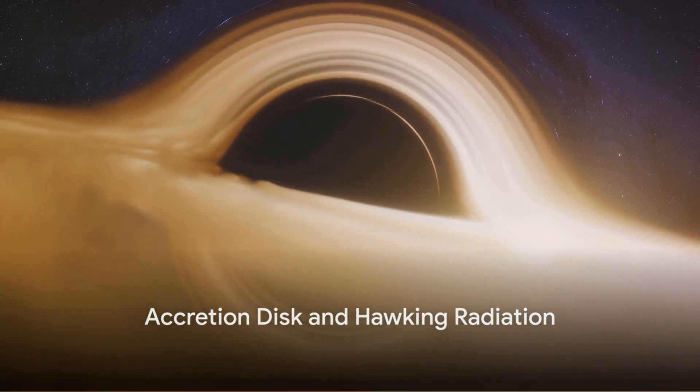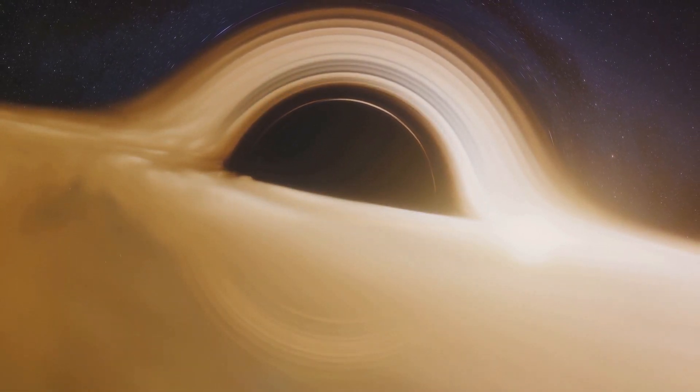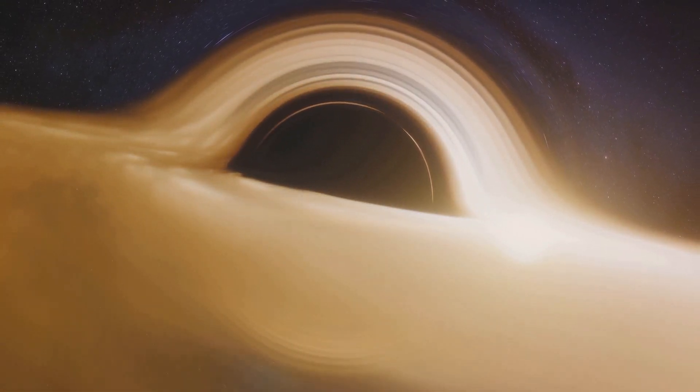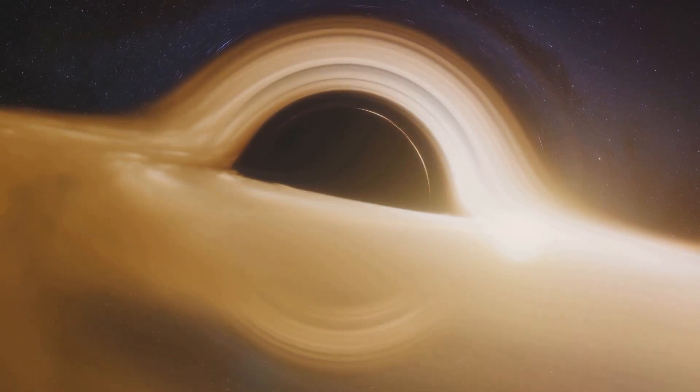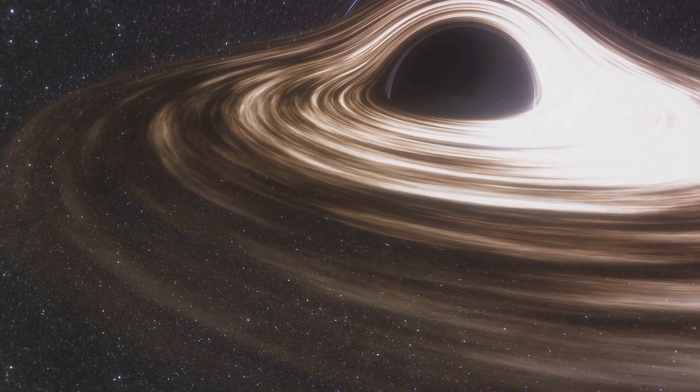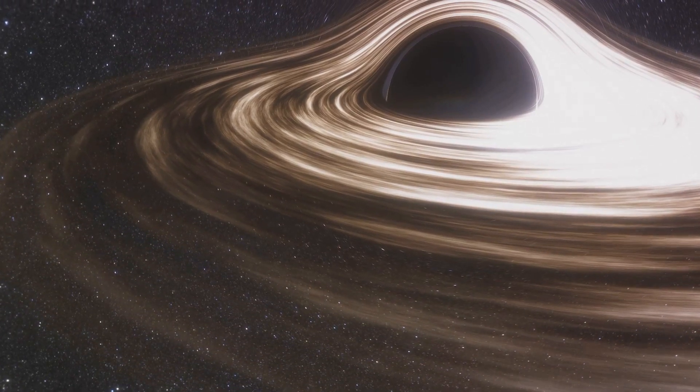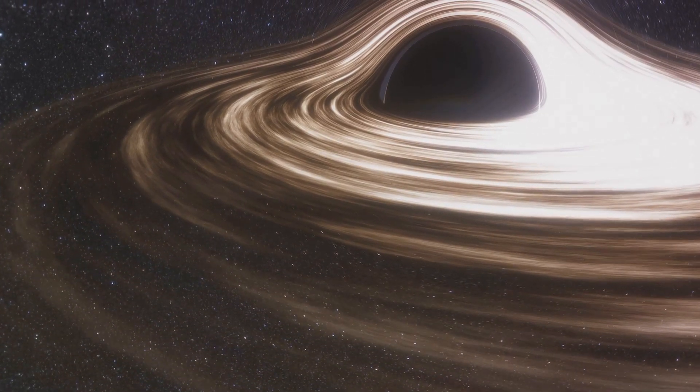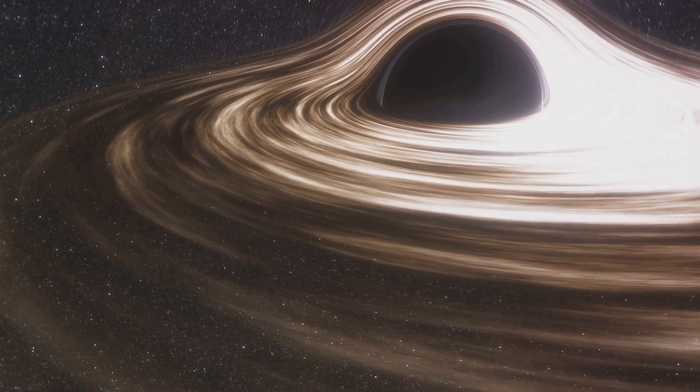Sagittarius A asterisk feeds on a swirling disk of matter while emitting mysterious radiation. Let's dive into this cosmic phenomenon. The swirling disk of matter we're talking about is known as the accretion disk. It's a flat, pancake-like structure composed of gas, dust, and debris, spiraling into the black hole.